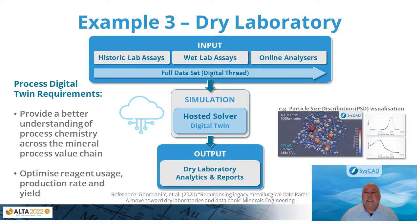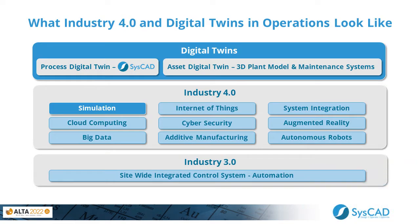In this figure, we see what Industry 4.0 and digital twins look like in operations. We have Industry 3.0 systems, which is our site-wide integrated control system or automation. With Industry 4.0 technologies — nine technologies being introduced into operations — simulation is one of these, and using that simulation to provide digital twins using SysCAD, process digital twins or asset digital twins using integrated 3D plant visualization and maintenance systems.